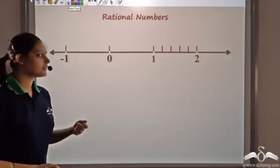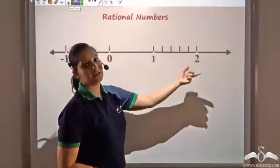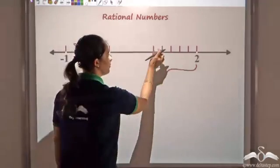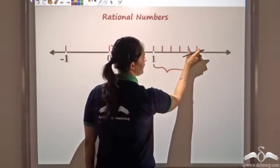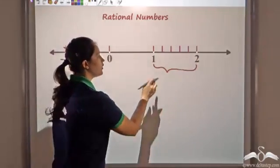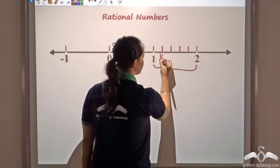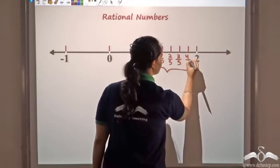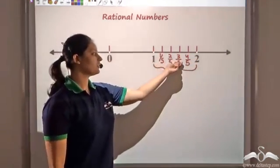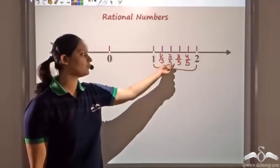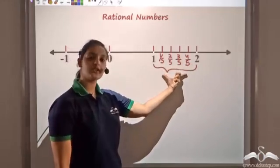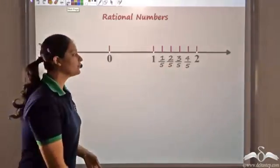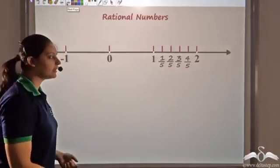Another way: if I want to find 4 numbers between 1 and 2, I divide this unit length into 5 equal parts. I have divided this unit length into 5 equal parts. Now each part represents 1 by 5. So the divisions give me 1 by 5, 2 by 5, 3 by 5, 4 by 5 from the starting point. So I can write numbers between 1 and 2. This number is not 1 by 5 — it is actually 1 plus 1 by 5.